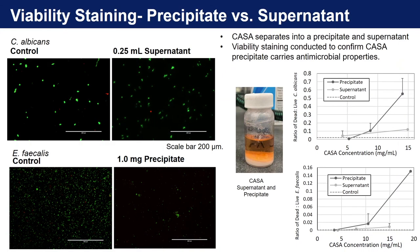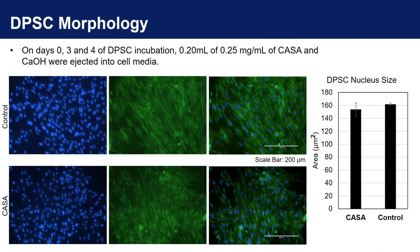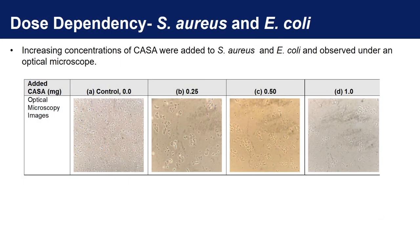I also conducted viability staining with ephacallus and candida albicans to confirm that CASA precipitate, and not the supernatant, contributed to the paste's antimicrobial properties. I confirmed CASA's biocompatibility with fluorescent images of dental pulp stem cell morphologies. Finally, I determined CASA is dosage dependent. This information would be useful in any future in vivo clinical trials of CASA to treat secondary root canal infections.